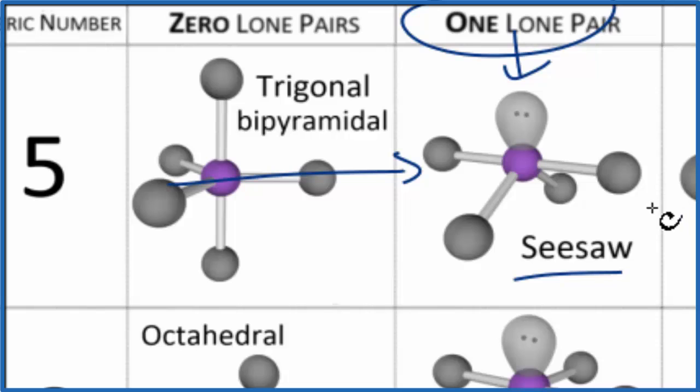If we wanted to look at the bond angle, we would expect this would be 180 here right along this line. This would be 120, and then we would have 90 degrees for these here. Those are the ideal bond angles. The actual bond angles would be a little bit different. They're listed in the description for this video.